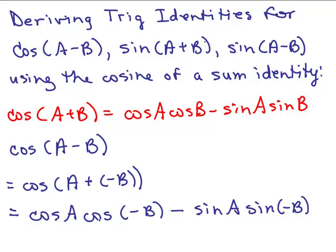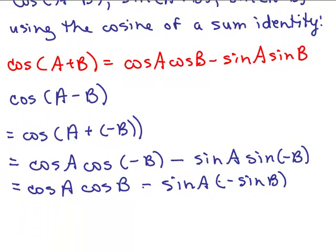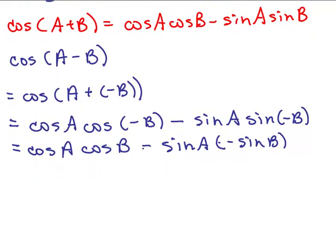Now, the other identities you need to know are: the cosine of negative b is the same thing as the cosine of b, and the sine of negative b is negative the sine of b. So the cosine of negative b actually equals the cosine of b, but the sine of negative b is negative the sine of b. That's because the cosine is an even function, whereas the sine is an odd function.